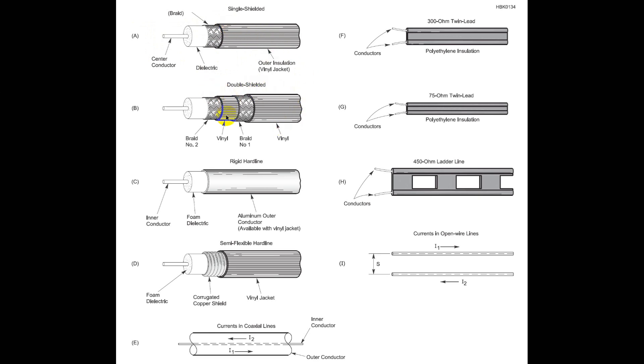Now the next one is double shielded. And this vinyl in between is found in some cables, but not all. For example, Times Microwave, either LMR240 or LMR400 has the plastic in here.